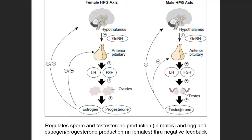This feedback loop — combining positive and negative feedback — works together to keep testosterone levels and sperm levels within a homeostatic range, increasing them when they get too low and decreasing them when they get too high.